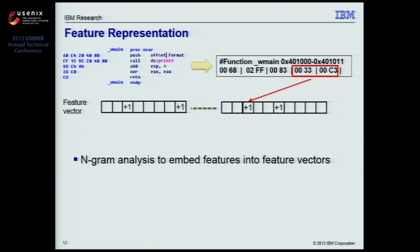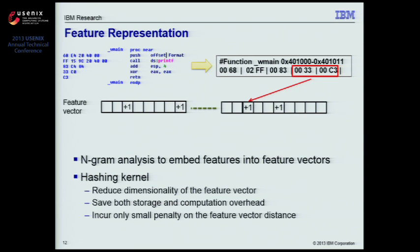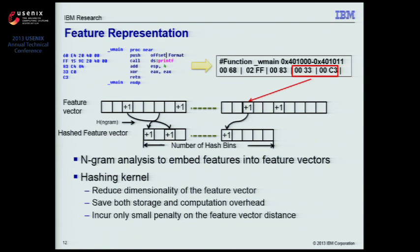The first is a hashing kernel method, developed in the machine learning community, which is used to reduce the high-dimensional feature vector into a lower-dimensional feature space, saving both storage and computational overhead with only a small penalty on accuracy. The basic idea is to use the hash of the n-gram as the index into the lower-dimensional feature vector. In case of a hash collision, we add the feature count in the original feature vector to the count for the new feature. It has been proven that as long as the hash function is uniform, the penalty incurred by dimension reduction grows only logarithmically with the number of input data.